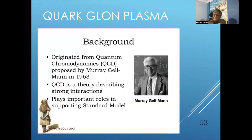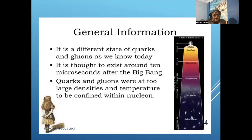As the high temperature state also includes the quark-gluon plasma — made from quarks and gluons — it originates from quantum chromodynamics (QCD theory), proposed by Murray Gell-Mann in 1963. QCD describes strong interactions and plays an important role in supporting the Standard Model. It is thought to have existed around 10 microseconds after the Big Bang.